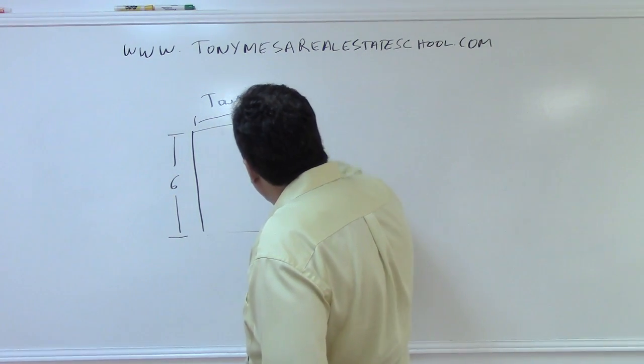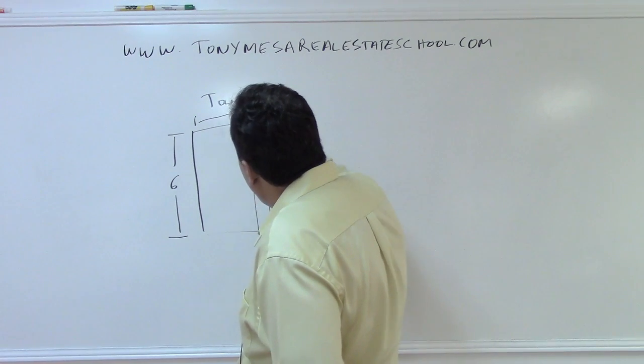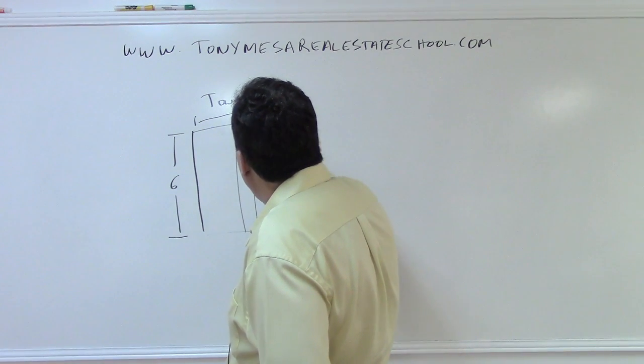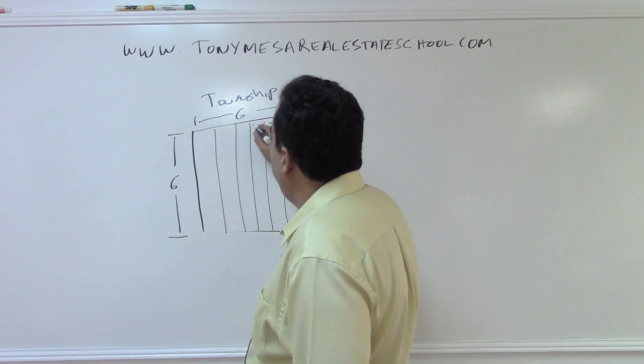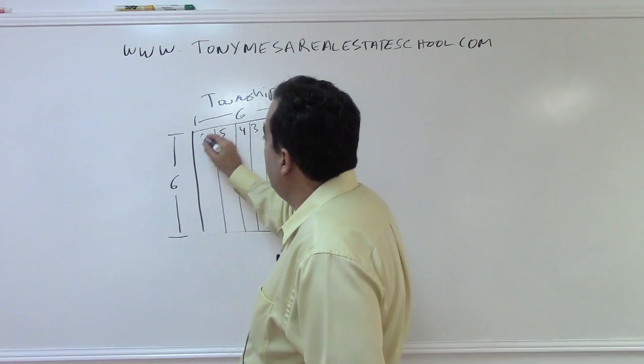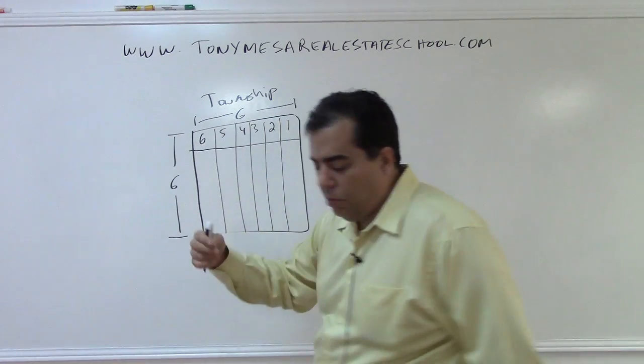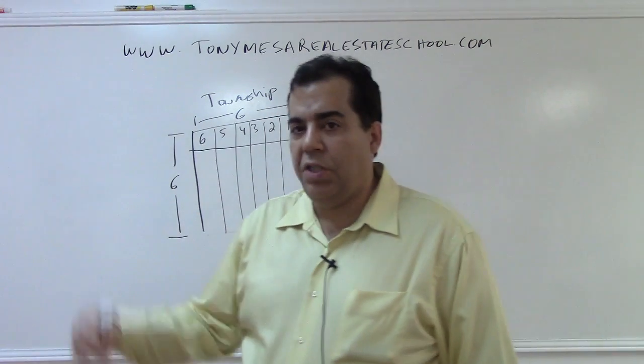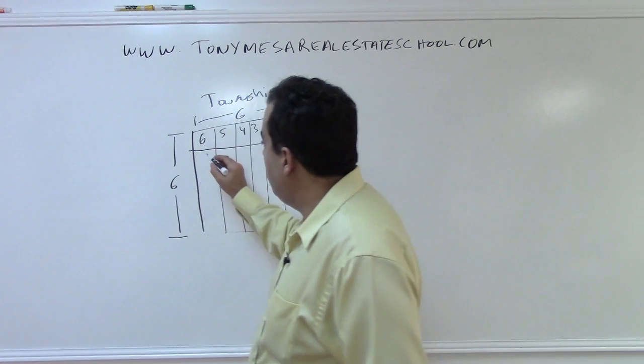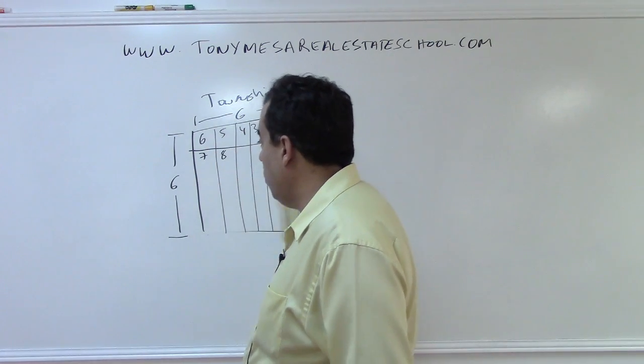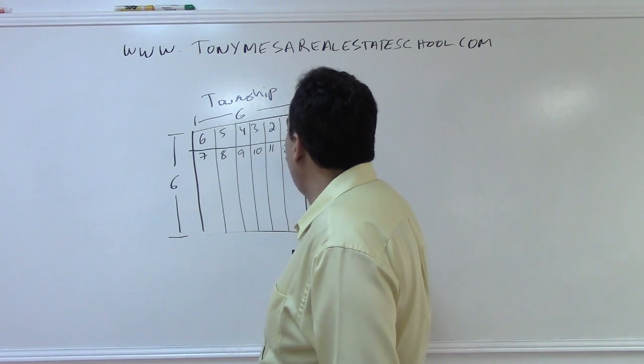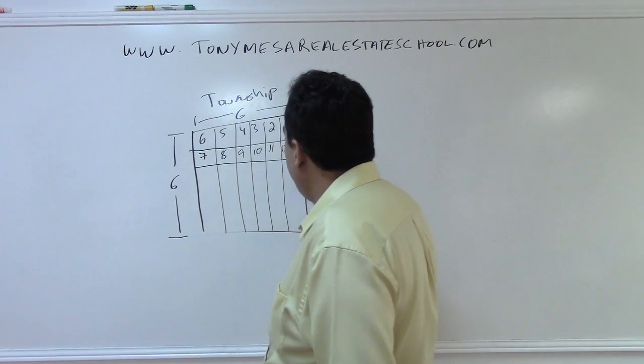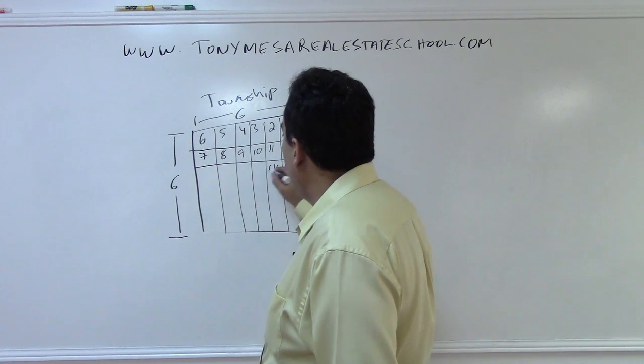So the idea is that inside each township you have 36 sections. And the way that it works is you always begin in the northeast corner with section number one, and you work your way east, three, four, five, and six. And then the surveyors, what they would do back in those days is when they got to section number six, they would drop down to seven and work their way back east. So nine, ten, eleven, twelve, and then they would drop down to thirteen and so forth.